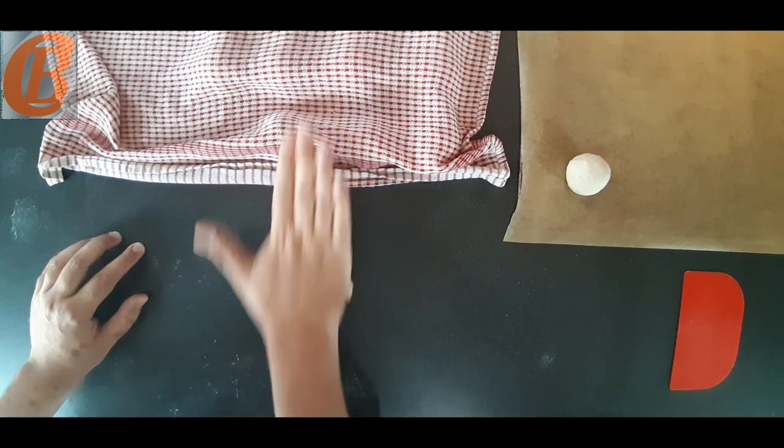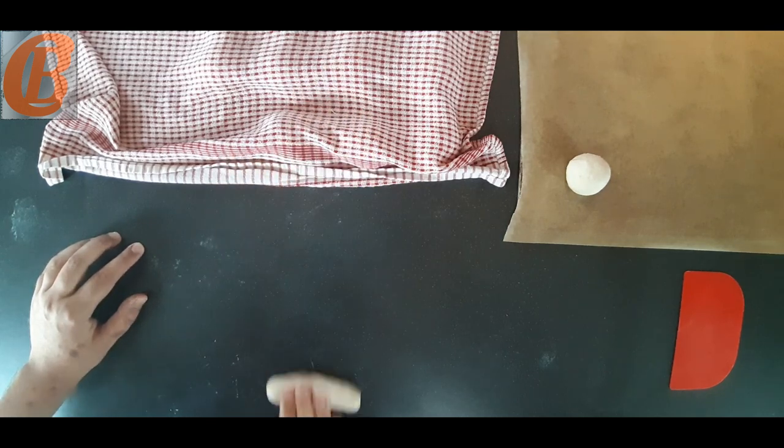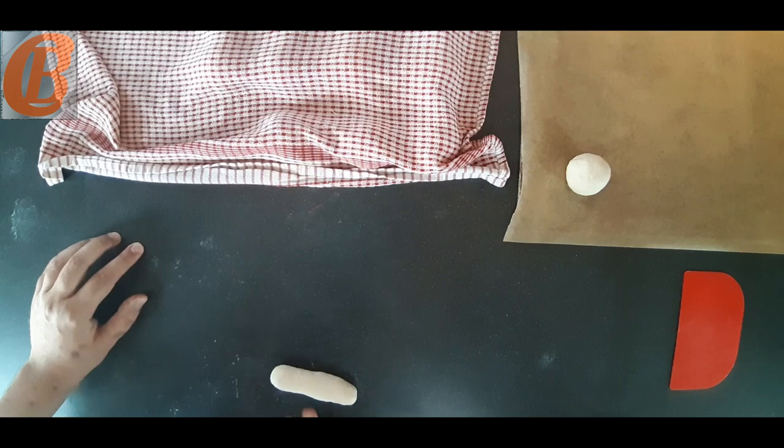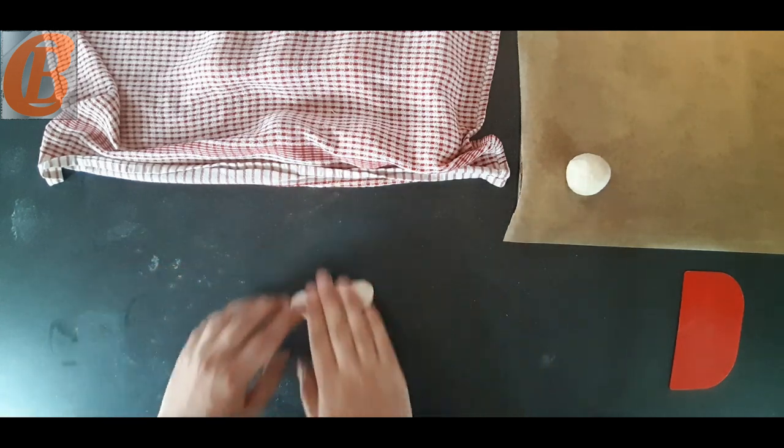Shape number two, we're just going to make sure it's nice and round again. And then we're going to roll it just into this oblong and leave it just like that. Shape number two, done.